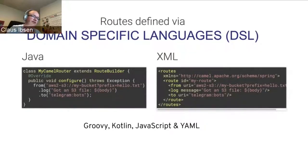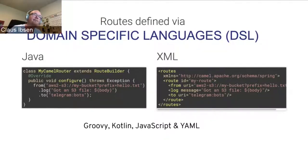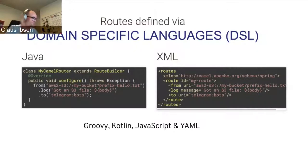In Camel, you integrate systems by writing routes or Camel routes. Traditionally this is done in Java code or XML. But in the latest Camel 3 version, you can also define Camel routes in other languages like Groovy, Kotlin, JavaScript, and YAML — and we're going to see YAML later in the demos. On the slide, the routes are similar in functionality — picking up files from S3 and sending to a Telegram endpoint. If you've never programmed Camel before, you can get a sort of understanding of what the integration is doing just by looking at the code.